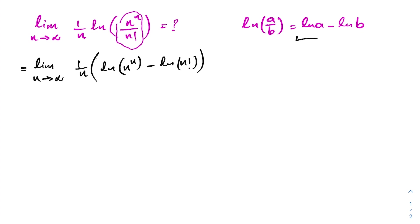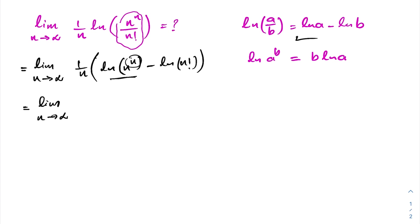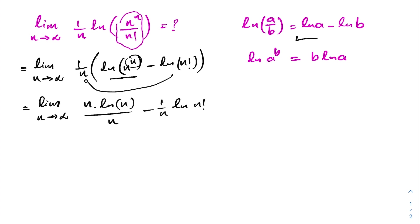Then, since we have n raised to the n, we use another property of natural log: natural log of a raised to the b equals b times natural log of a. So we can write the limit as n approaches infinity of n times natural log of n over n, minus 1 over n times natural log of n factorial.